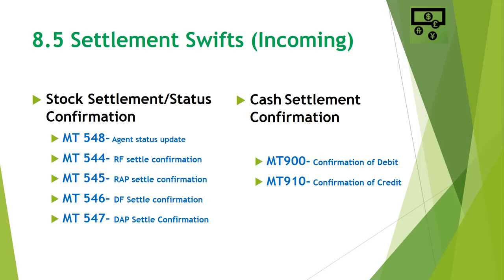MT546 is deliver free settle confirmation — when an MT542 deliver free instruction is sent and settles, the agent sends back MT546 as confirmation. MT547 is deliver against payment settle confirmation — when an MT543 deliver against payment instruction settles, the agent sends back MT547 confirming settlement. For cash settlement confirmations, MT900 is sent when the cash agent confirms a debit into our account as per our instructions, and MT910 is a confirmation of credit when our agent receives cash from a counterparty.